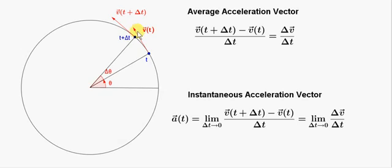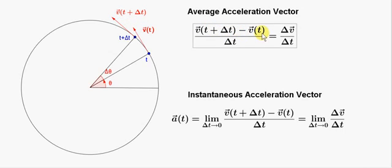These two velocity vectors are different because they point in different directions. The magnitudes are the same because we're dealing with uniform circular motion. To find the average acceleration of the object as it moves from here to here, we need the change in velocity: the final velocity v of t plus delta t minus the initial velocity v of t. We then divide that difference by the time delta t.